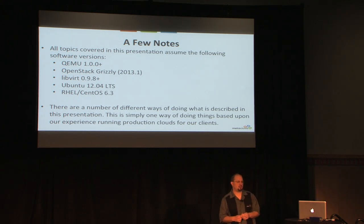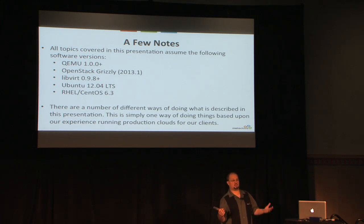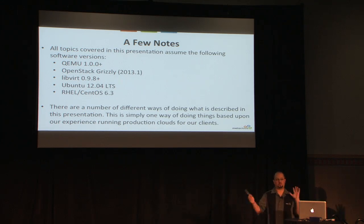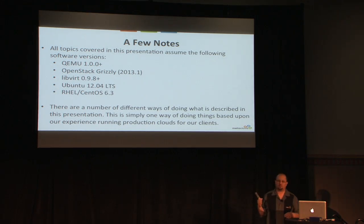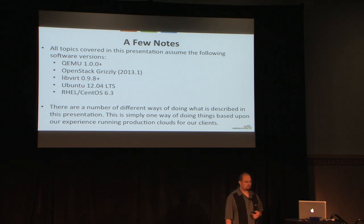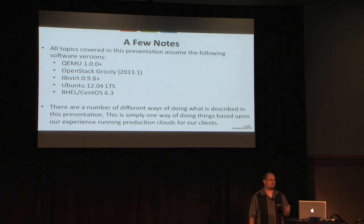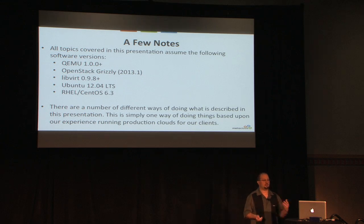A few notes about this presentation: there are literally hundreds of different combinations of tools, disk formats, container formats, and versions of software you can use, and there are a ton of different hypervisors. We're only talking about KVM and QEMU here today because we've got less than 40 minutes. We make a couple of assumptions — we use OpenStack Grizzly, particular versions of QEMU and libvirt, and we're talking about Ubuntu and RHEL as our guest VMs.